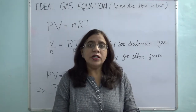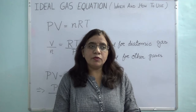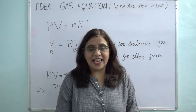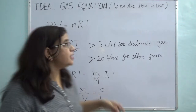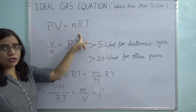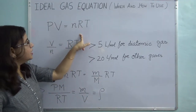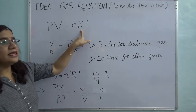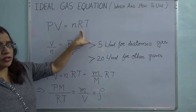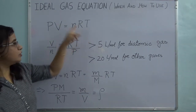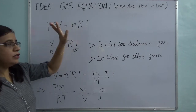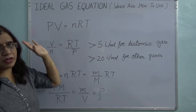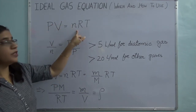Equations of state are those equations which connect pressure, volume, and temperature. The most common equation of state is the ideal gas equation and it takes the form PV = nRT, where N is the number of moles and R is the standard gas constant. Its value in different units is listed in several books.